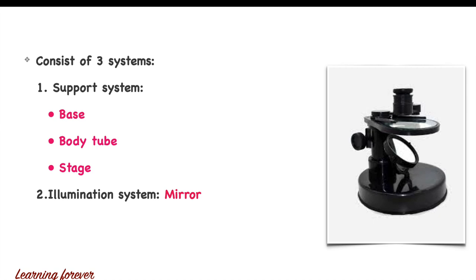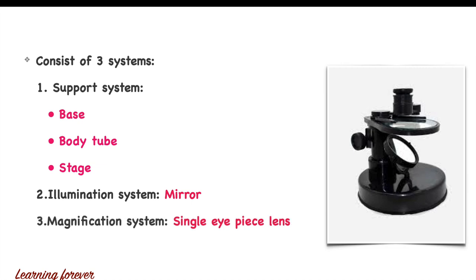Second is the illumination system. The illumination system of a simple microscope consists of only a mirror, which illuminates light on the object. Third is the magnification system. It consists of a single convex lens which helps in magnification of the object.